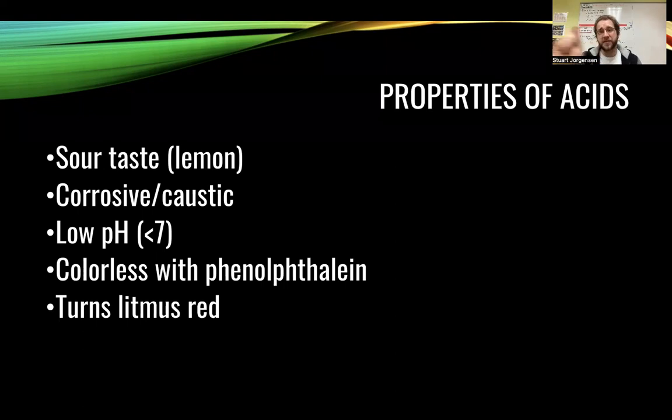Another indicator we can use is called litmus paper. It's just a little strip of paper. If you've ever worked at a pool and they're testing the pH of the water, they'll fill a little chamber, put the paper in there. And that's another way we can test for the acidity of a solution, what's called litmus paper. It's kind of like test strips, test strips of paper.